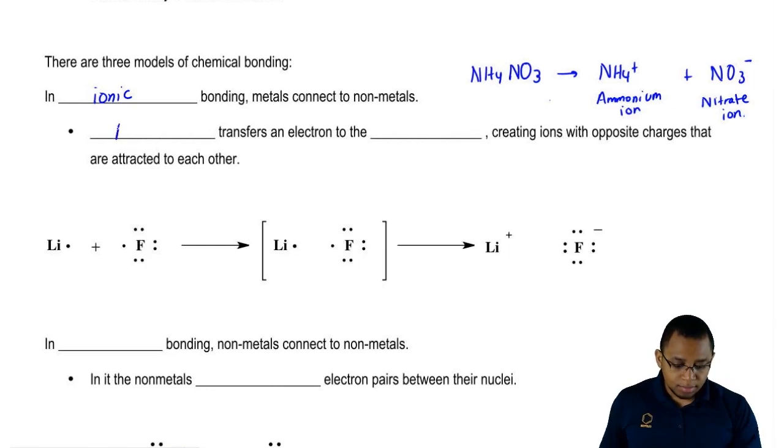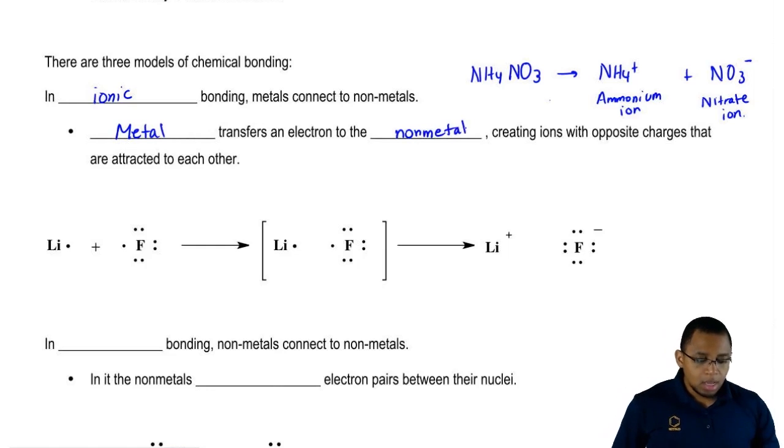Now we're going to say that the metal transfers an electron to the nonmetal. Now if the metal is transferring an electron, it's losing that electron. So the metal will become positive. And we've said before that a positive ion is called a cation.